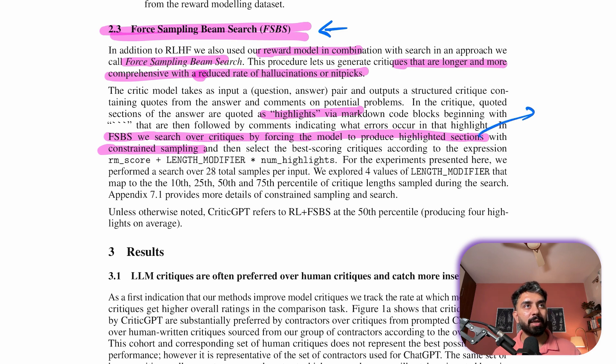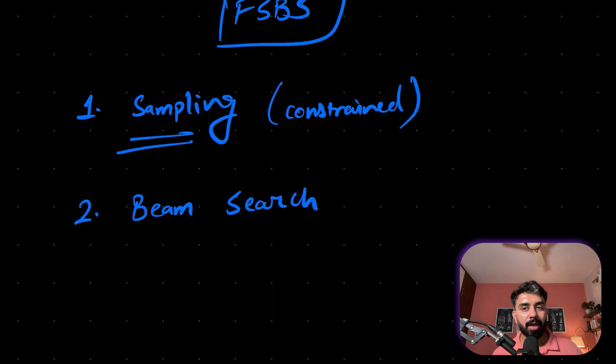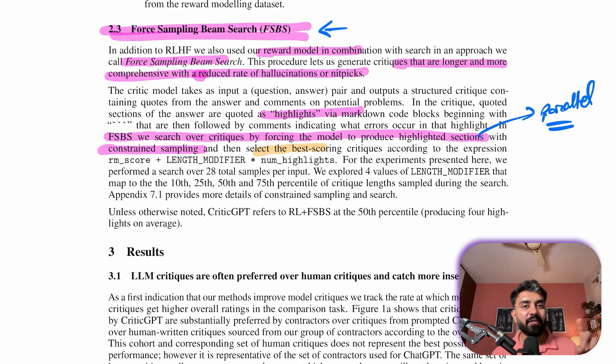Then we have beam search. The model uses beam search to explore multiple candidate critiques in parallel, and this allows it to generate longer, more comprehensive critiques by considering a wider range of possible highlighted sections and the comments that are written alongside. Then finally we have the scoring model.